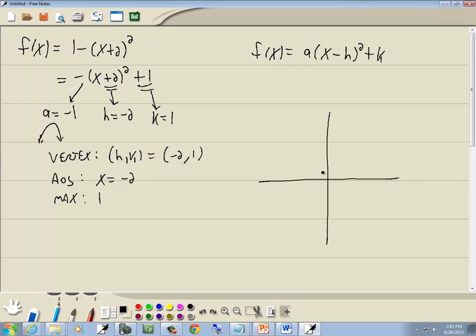Okay, so vertex is (-2, 1). Right there. Probably the easiest one, if it works, is the y-intercept. So we'll go back to the original function, f(x) is y. We'll put 0 in for x.